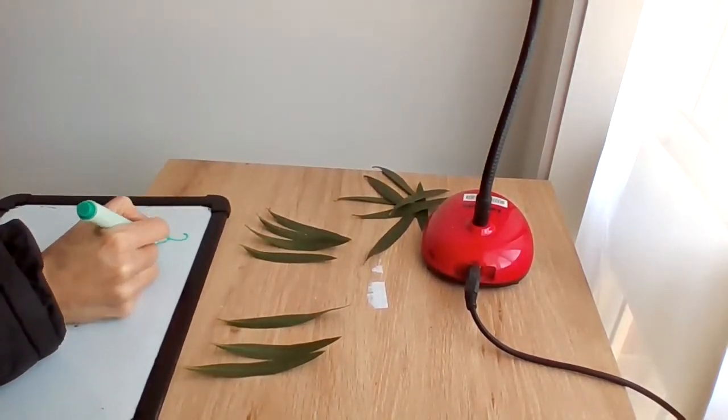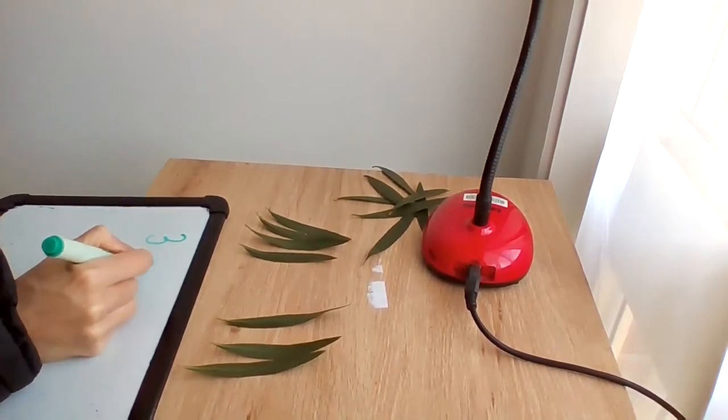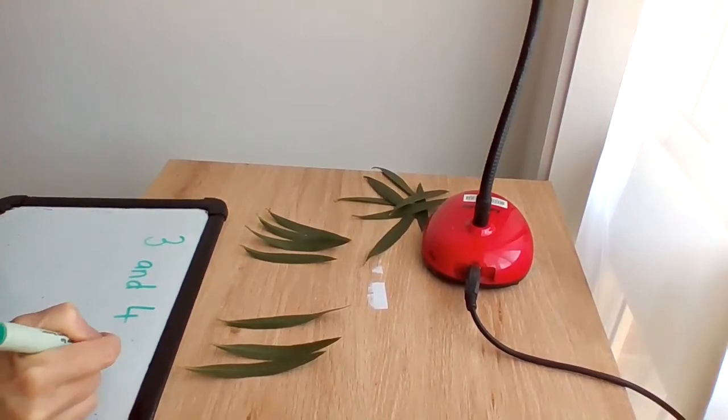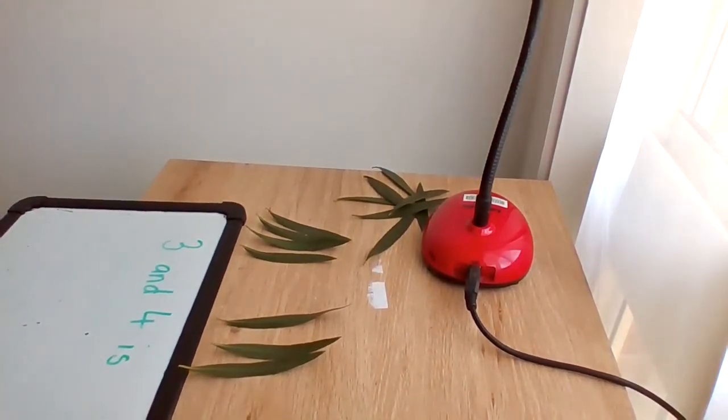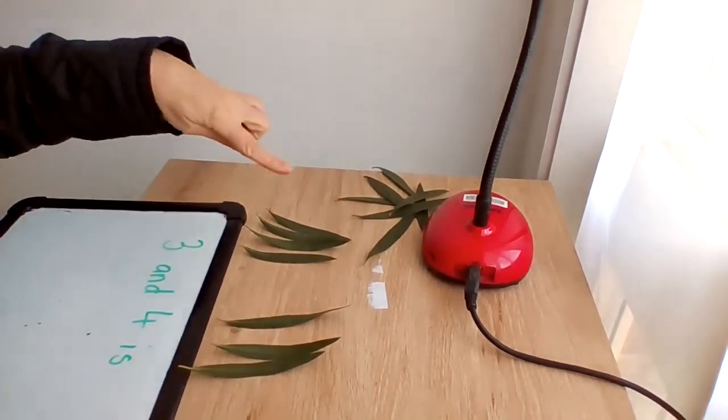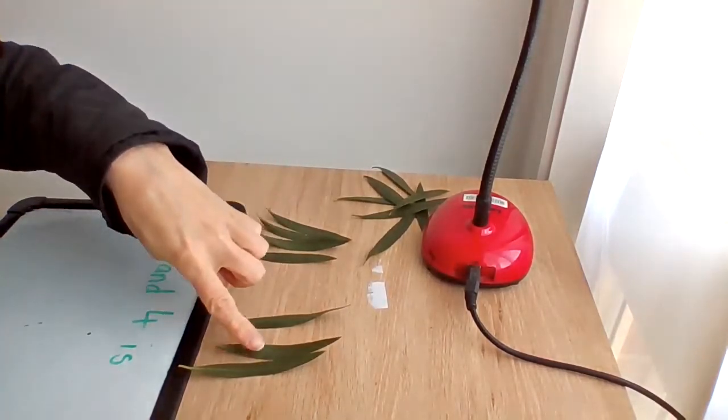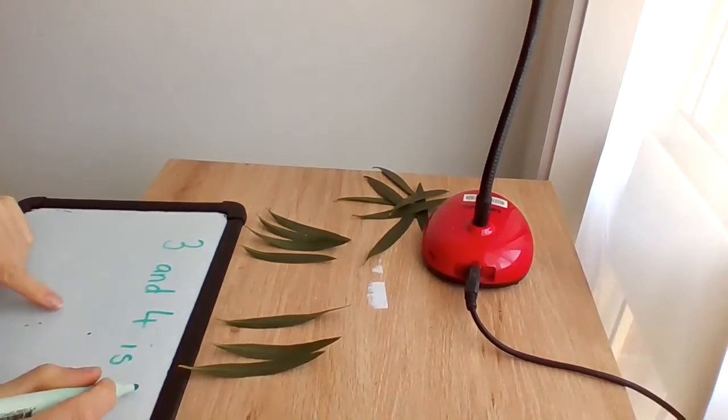So I say three and four is, and let's count them all together. One, two, three, four, five, six, seven. Seven. So I have seven leaves altogether.